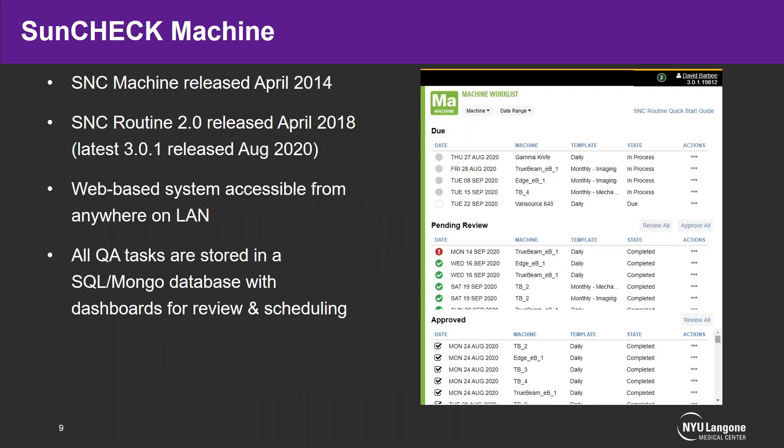With that in mind, we looked into SunCheck Machine, the spiritual successor to SunNuclear Atlas, which was released initially as SNC Machine in April 2014, dealing primarily with the imaging tasks of TG142. SNC Routine 2.0 was then released in April 2018, which we signed on for and began implementing clinically that same month. The latest release is 3.0.1, released around August 2020. When I originally gave this presentation in February, we were on version 2.2, so some slides may differ — I've tried to update wherever I can.